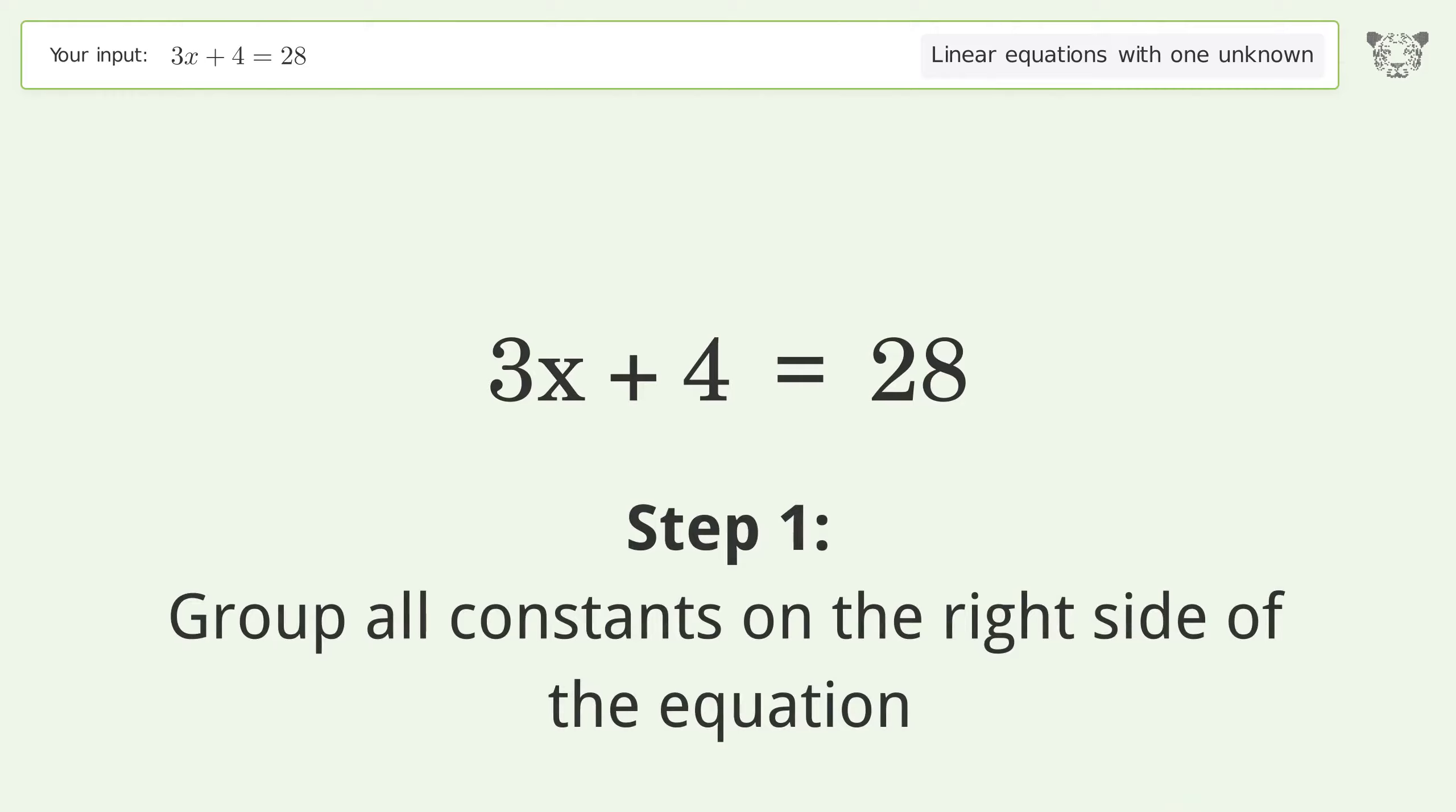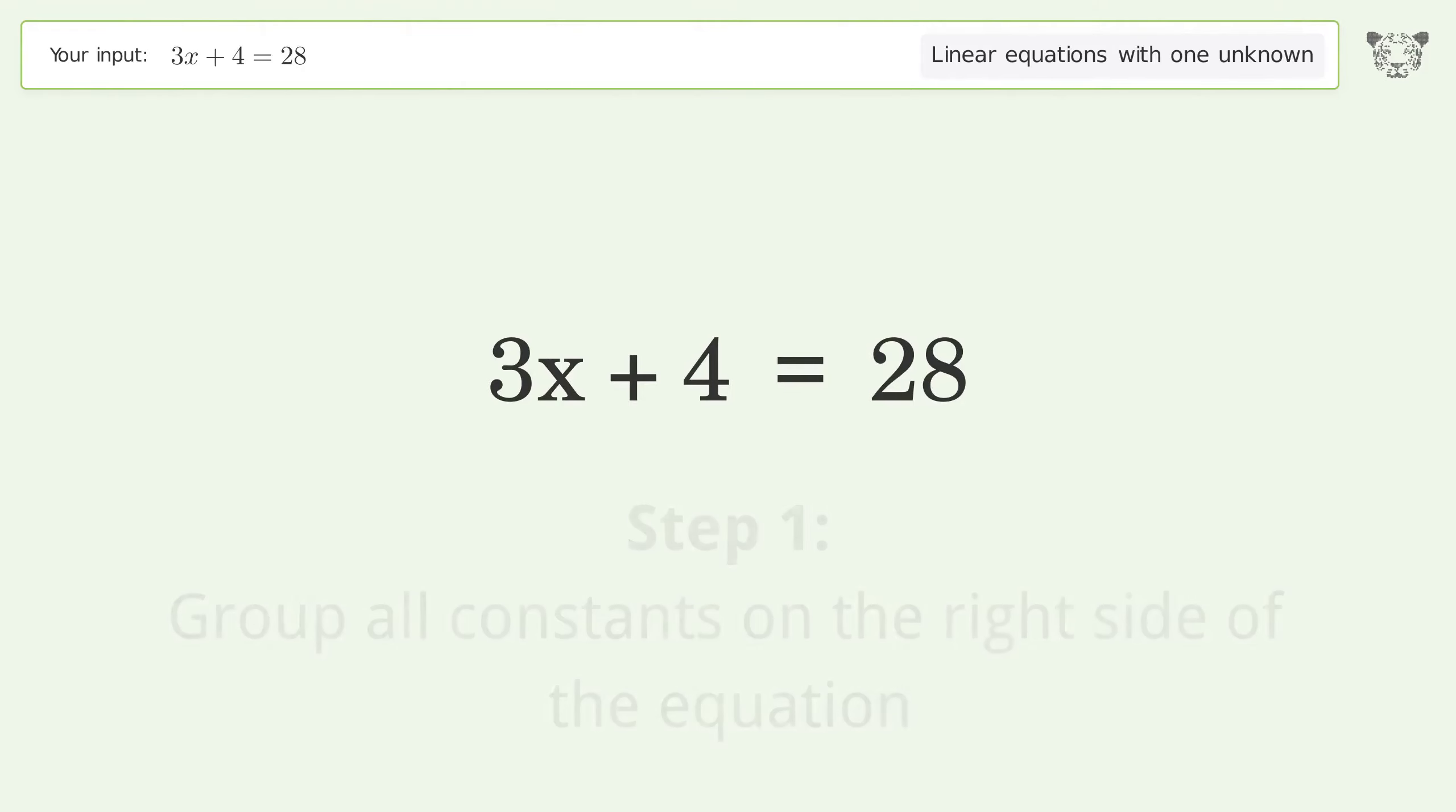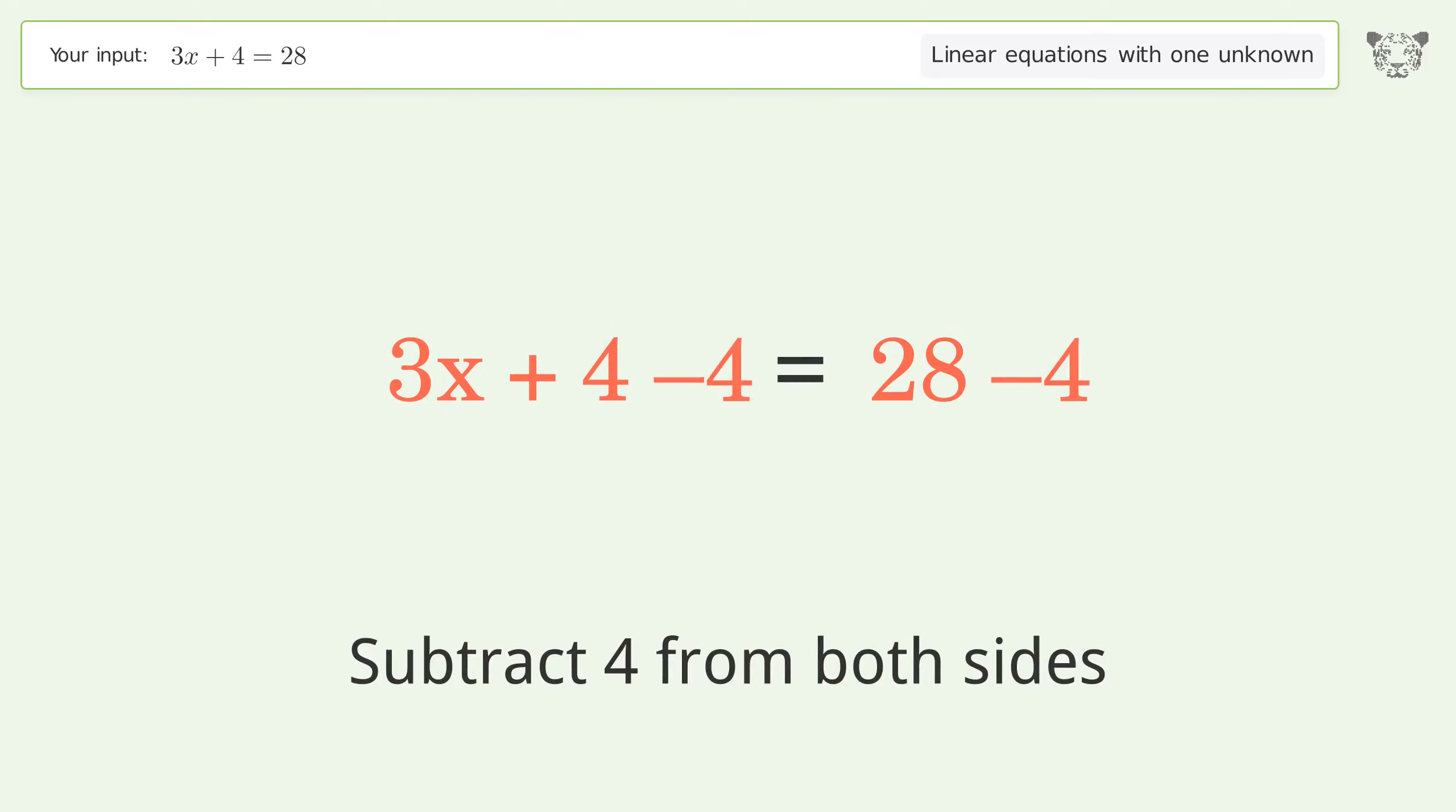Group all constants on the right side of the equation. Subtract 4 from both sides. Simplify the arithmetic.